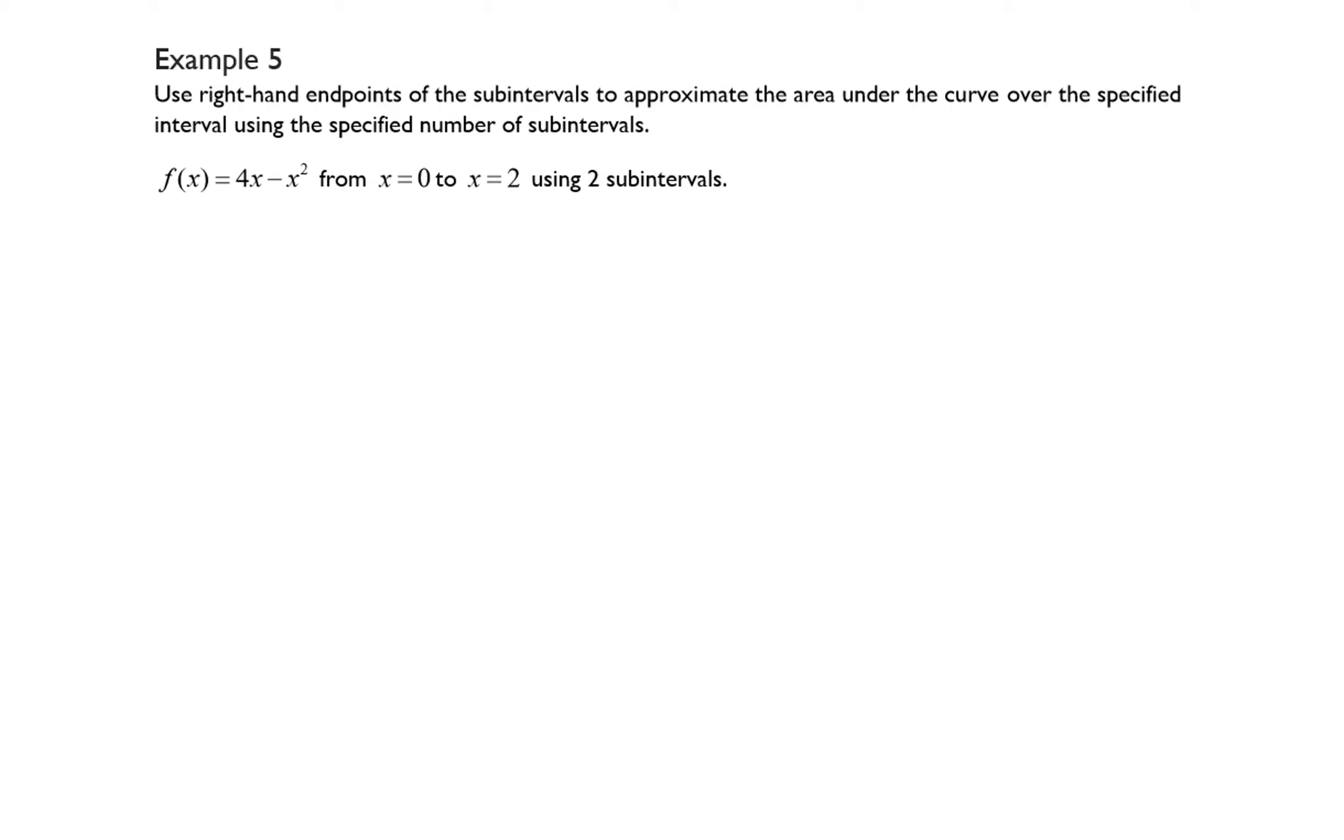Example 5 says use right-hand endpoints of the subintervals to approximate the area under the curve over the specified interval using the specified number of subintervals, where our function f of x is equal to 4x minus x squared from x equals 0 to x equals 2 using two subintervals.